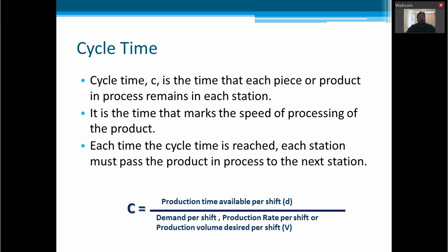And how do we calculate this cycle time? By dividing the production time available per shift by the demand per shift, or the production rate per shift, or the production volume desired per shift. These are three different concepts that we can take into account to calculate the cycle time.